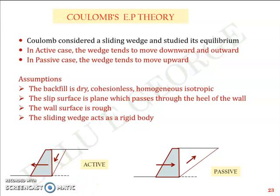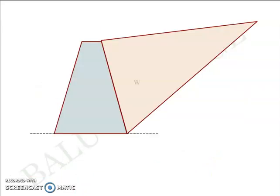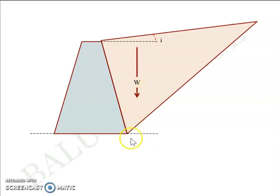While deriving the equation for Coulomb's earth pressure theory, we have a retaining wall and we consider a sliding wedge whose weight is W. To generalize, we assume the plane to be inclined with respect to the horizontal at an angle psi, and the weight will pass through the center of gravity of the soil wedge in the direction of gravity. The angle that the soil wedge makes with the horizontal and the angle that the retaining wall makes with the horizontal are marked as alpha and beta, as shown in the picture.